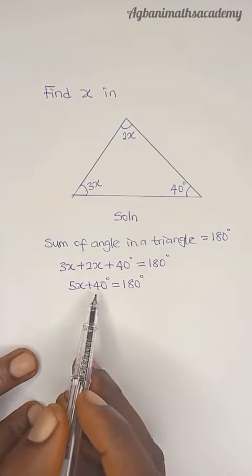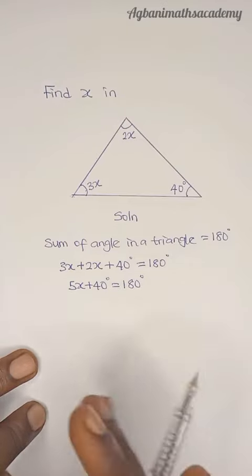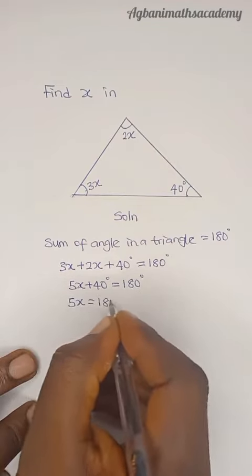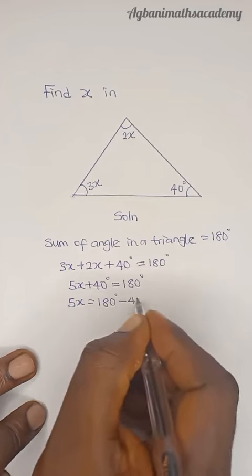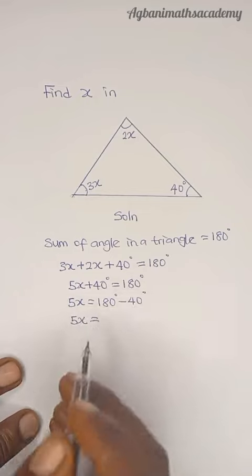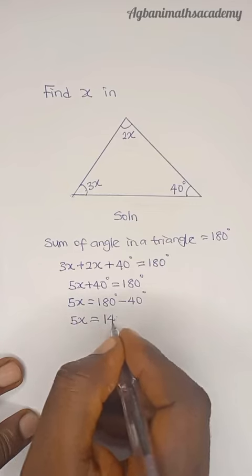So we are going to move plus 40 degrees to the right side of the equation, the positive sign changing to negative sign. So we are going to have 5x equals 180 degrees minus 40 degrees. This means 5x equals 180 degrees minus 40 degrees, which is going to give us 140 degrees.